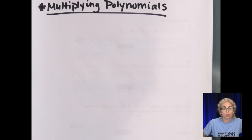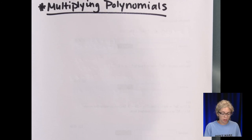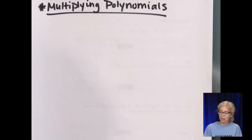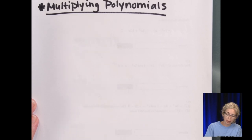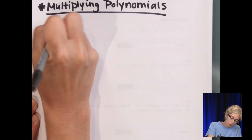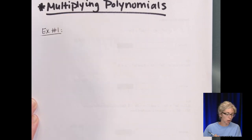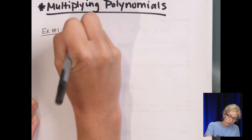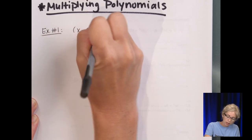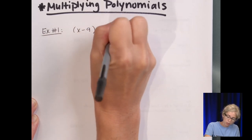For today's video, we're going to multiply polynomials. We're just going to do a variety of examples here that I have written down on multiplying polynomials. So the first example, we'll just start real basic in multiplying two binomials. Example number 1: let's do x minus 9 times x plus 4.